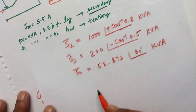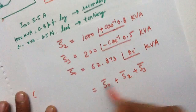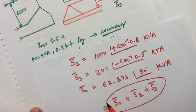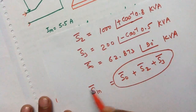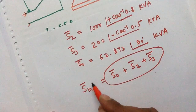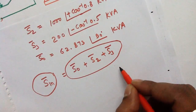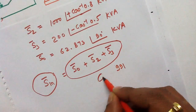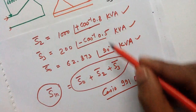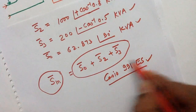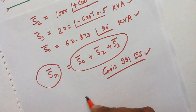The total complex power drawn is S0 + S2 + S3, which equals the complex power input S_input. Using a Casio 991ES calculator, you can directly add all three values. After the addition, you will get S_input.